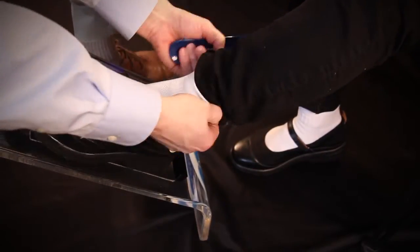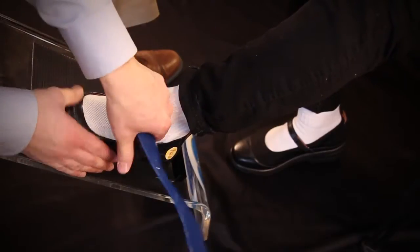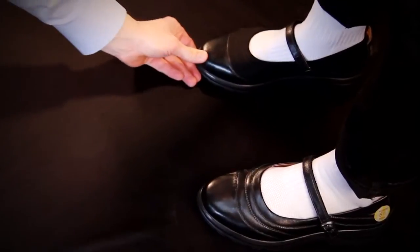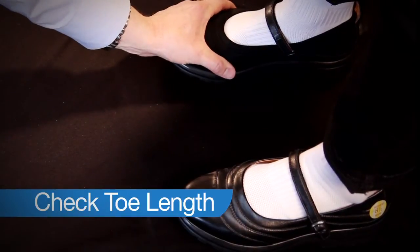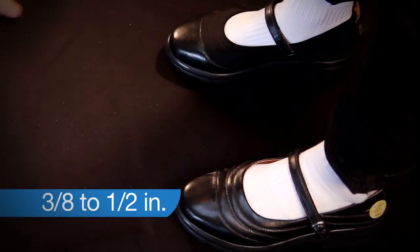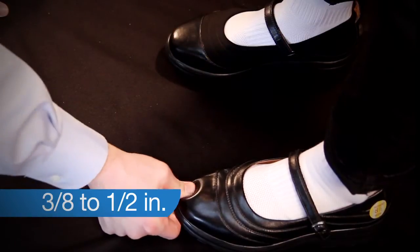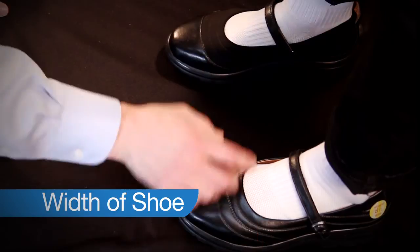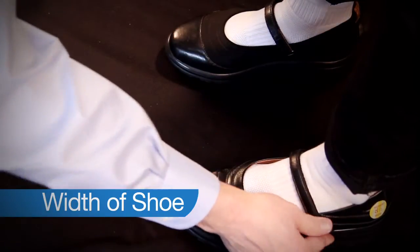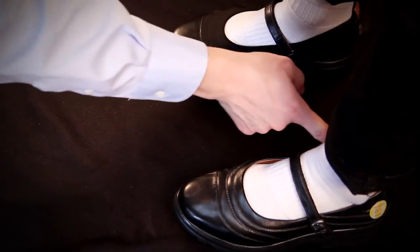Once the patient has put the shoes on, then we will have them walk around. To ensure the shoes fit appropriately, you want to first check the length of the toes, making sure there's at least 3/8 to a half an inch room from the end of the patient's toe to the end of the shoe. Then checking the width of the shoe, making sure her metatarsophalangeal joint is at the width of the shoe or the break point of the shoe.